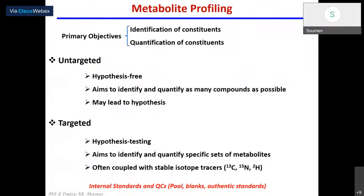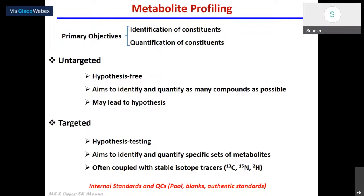Assuming that you have extracted your analytes and you now want to analyze them: the primary objectives are basically identification of what are the constituents and quantifying them. There can be two kinds of metabolome analysis. One is untargeted, which is hypothesis-free, where you want to look at whatever is in there — all kinds of metabolites that may be present in your extract. This may eventually lead to a hypothesis where you start thinking: this is all that had changed, therefore this may be the pathway, or the signaling molecule, or the gene which may have been affected.